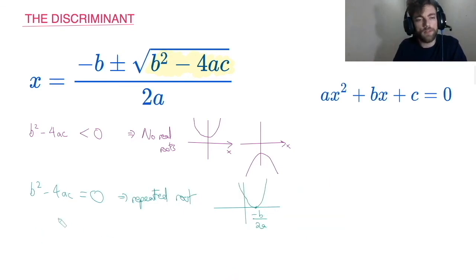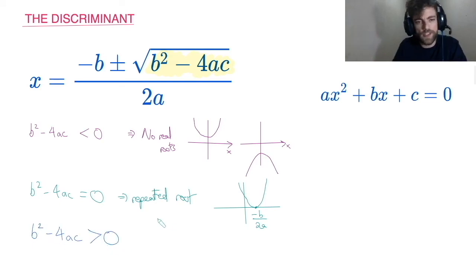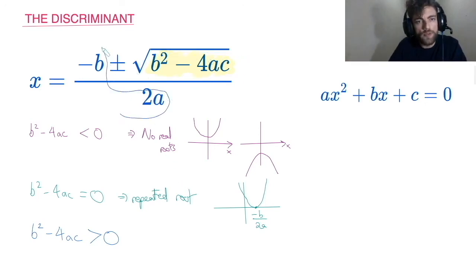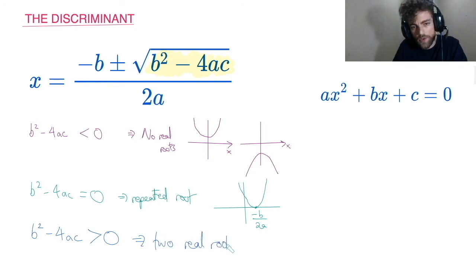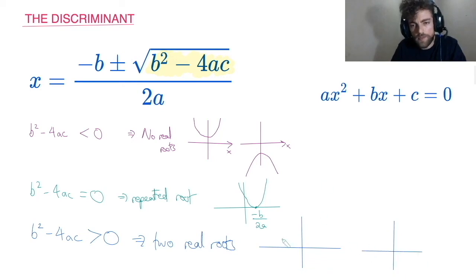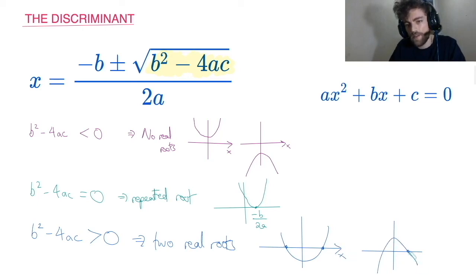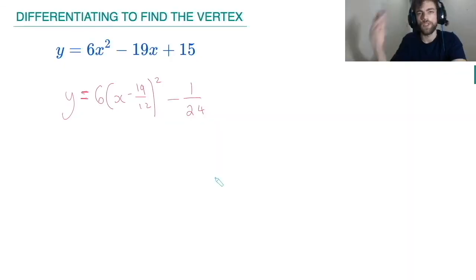Lastly, when B squared minus 4AC is greater than zero, there's no problem square-rooting a positive number, and I get two real roots: minus B over 2A plus or minus the square root of the discriminant. Graphically these parabolas intersect the x-axis in two places — whether it's a positive or negative x squared graph.